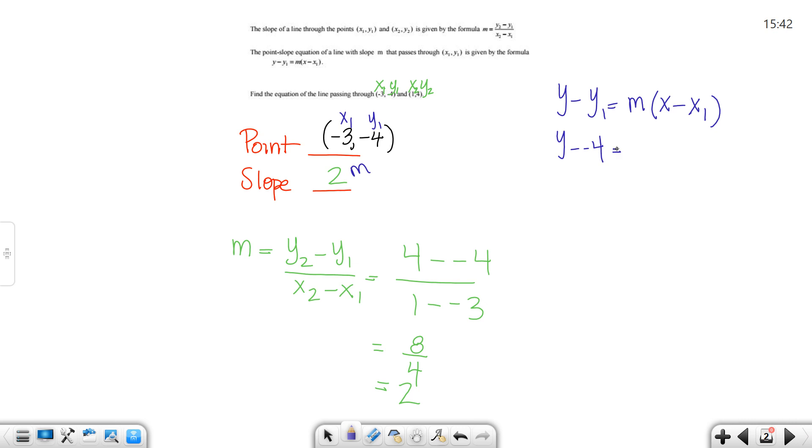Slope, of course, is the letter m. So, we're going to say y minus y, which would be negative 4, equals my slope, which is 2, times x minus negative 3. Okay, before you do any math to it, clean up the double negatives.